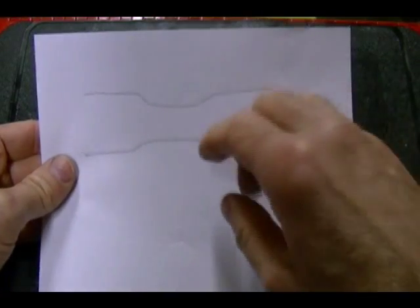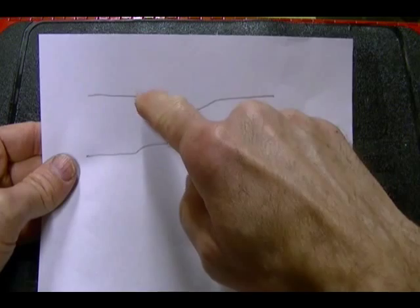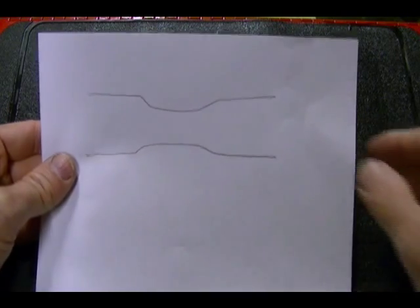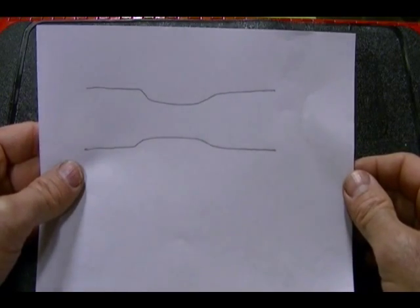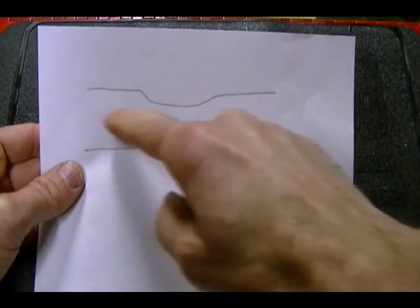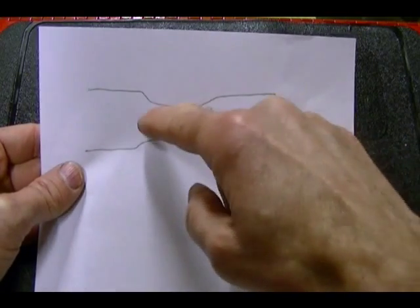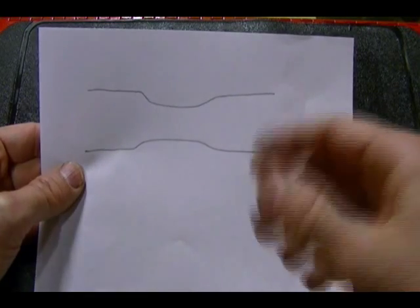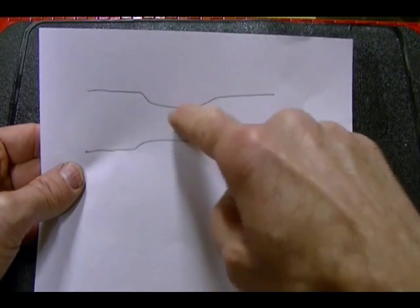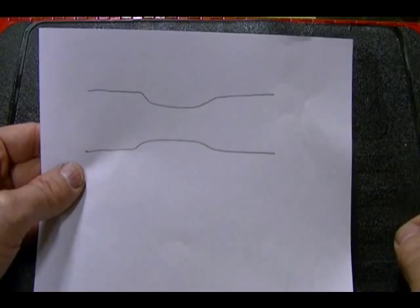The venturi part of the carburetor is this more restricted area through the passageway, and what the venturi effect does is when air passes through this more restricted area, it speeds up and drops in pressure, so the venturi effect creates a low pressure area in the venturi.